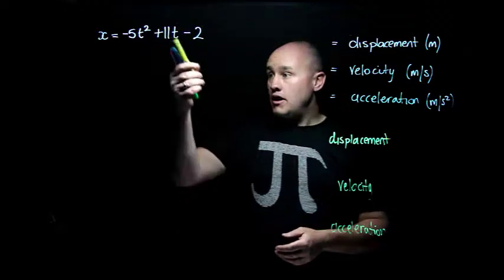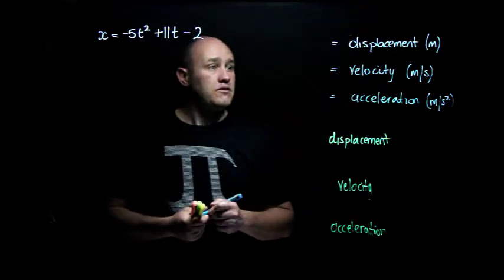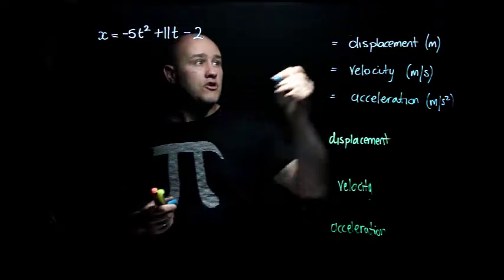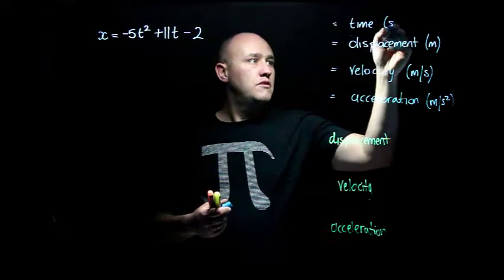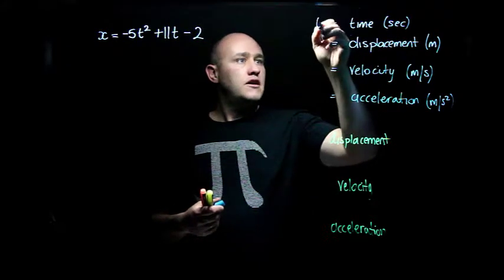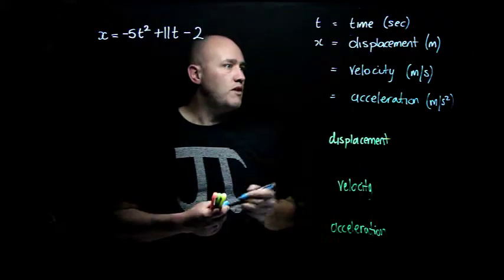First, I just want to define a couple of things. This t is time - hopefully this is in the screen - time in seconds. That's my t. And then x is my displacement.